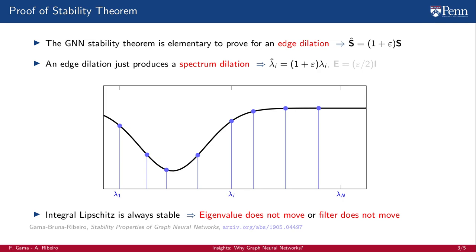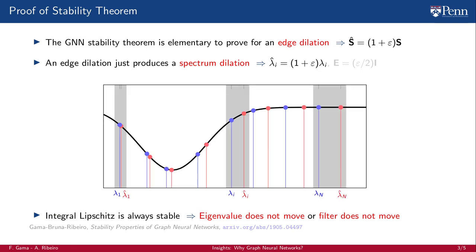Integral Lipschitz filters, however, are always stable. Recall that integral Lipschitz filters can have arbitrary variations for small values of λ, but need to be flat for large values of λ. This forces the case where either the eigenvalues are small and therefore don't move much — that is, in parts where the filter can be arbitrarily thin — or if they are large, then the filter is the one that doesn't move. This causes the output of an integral Lipschitz filter not to change much under graph perturbations, and thus integral Lipschitz filters are stable.